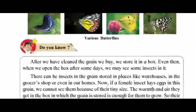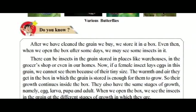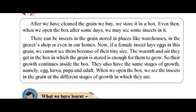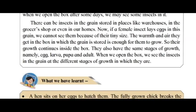After we clean grain and store it in a box, when we open the box after some days we may see some insects in it. There can be insects in grain stored in warehouses, the grocer's shop, or even in our homes. If a female insect lays eggs in the grain, we cannot see them because of their tiny size. The warmth and air they get in the box is enough for them to grow, so their growth continues inside the box.